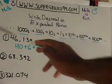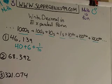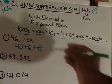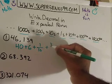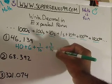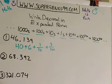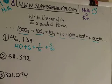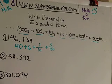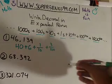Here's the three — that's in what place value? That's in the hundredths, so I'm going to put three over a hundred. And here's your nine — what place value is that in? That is in the thousandths, so I'm going to put nine over a thousand.